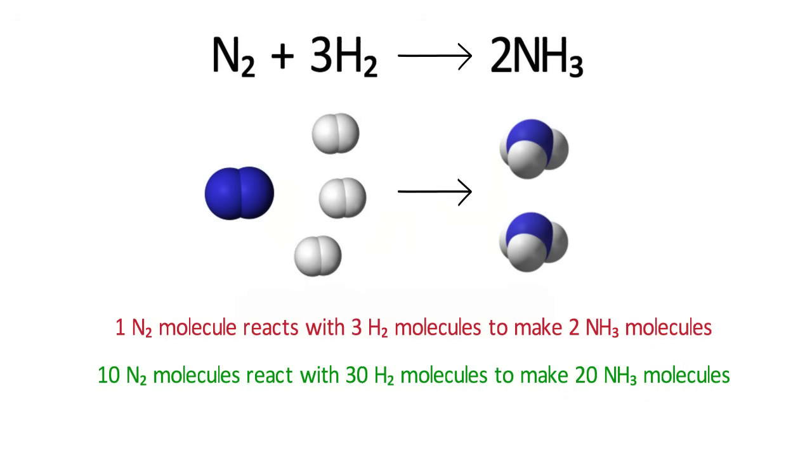The balanced chemical equation tells us that nitrogen, hydrogen, and ammonia are always in a 1 to 3 to 2 ratio, no matter how big or small the reaction is.